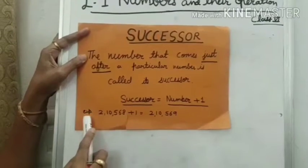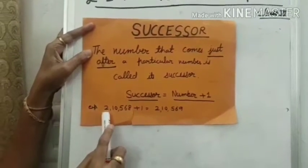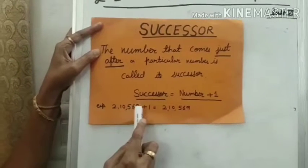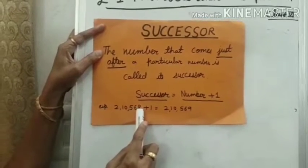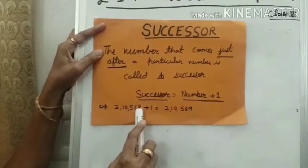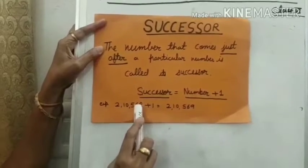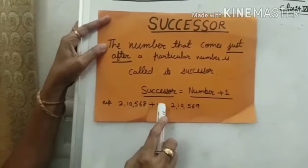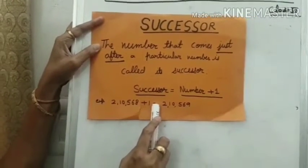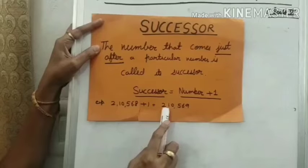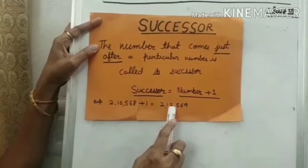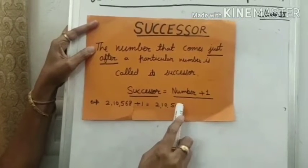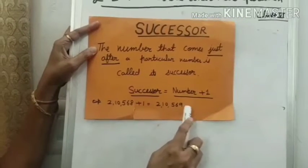For example, take the number 210,568. Then 210,568 plus 1 is equal to 210,569.